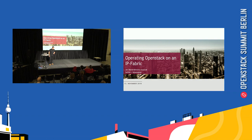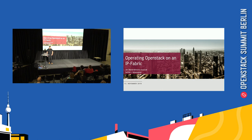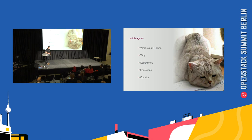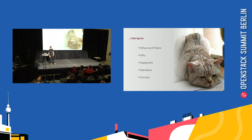Welcome to my talk: Operating OpenStack on an IP Fabric. My name is Jan Walzer, I'm a cloud architect for Innovo Cloud, and I will tell you why your expensive switches can do much more. The agenda: What is an IP Fabric? Why are we doing that? How do we deploy this? What does operations mean, and why are we using Cumulus Networks?